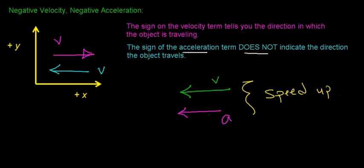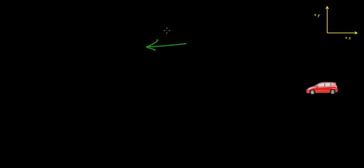In this video, I'd like to do an example where the velocity and acceleration are both negative. Our coordinate system has the positive x direction to the right. We have a car with some velocity in the negative x direction — this car is traveling in the negative direction. The initial velocity of this car is negative 5 meters per second, and the negative sign indicates it's traveling in the negative x direction.